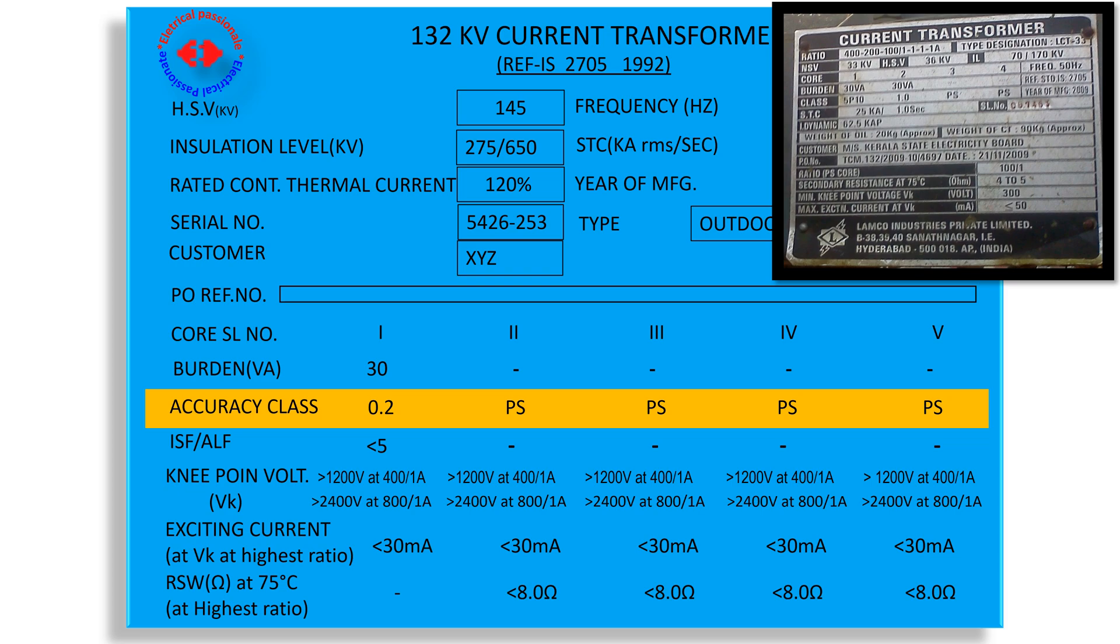Here, metering class core 1, accuracy 0.2, metering class accuracy according to metering subclasses as 0.2S, 0.5S, 1. For metering core, allowable composite error should be minimum.